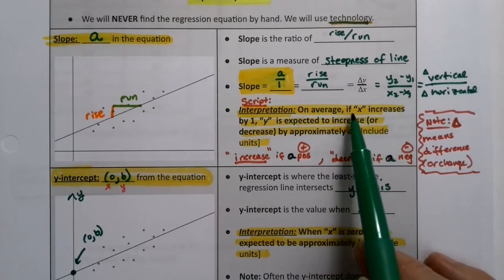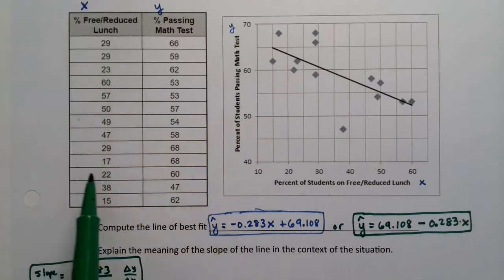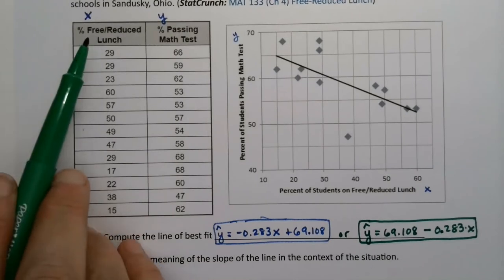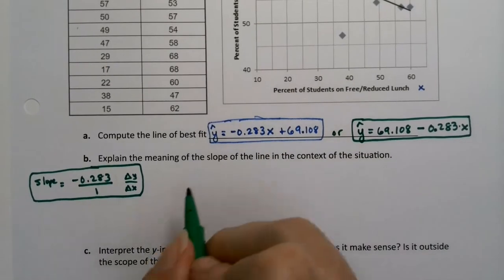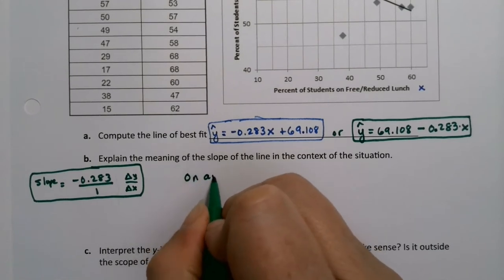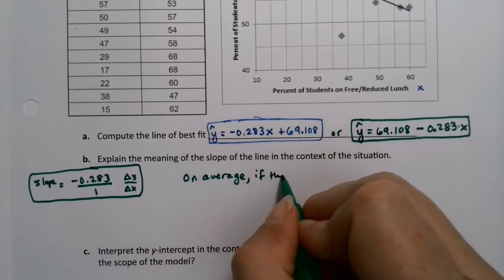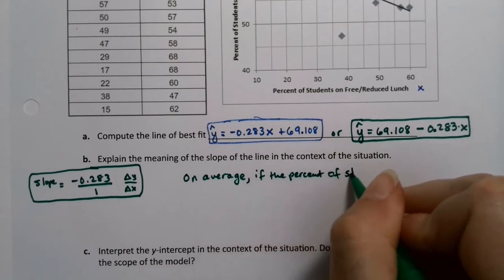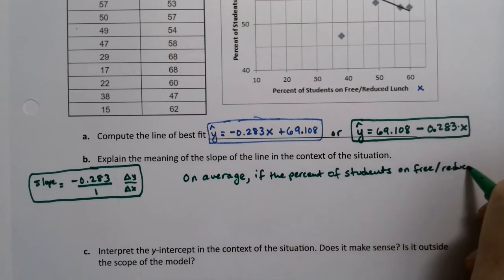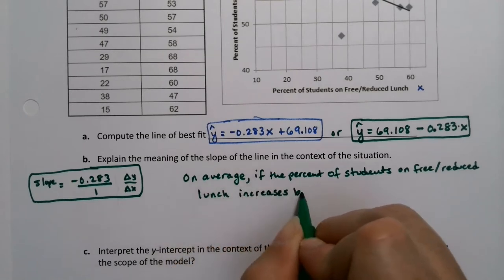We get a little loose with this, especially the x increasing by 1. So we could say, for every percent of student on free-reduced lunch, or as the percent of student of free-reduced lunch increases by 1, or for every 1% increase in the free-reduced lunch percentage by 1. So you could write that a lot of ways. But if I want to follow the script, let me write it out. It said, on average, I'll follow the script as closely as I can. If x increases.